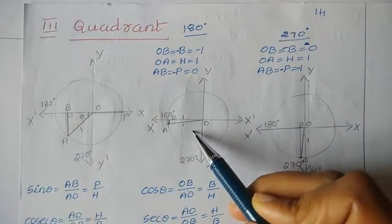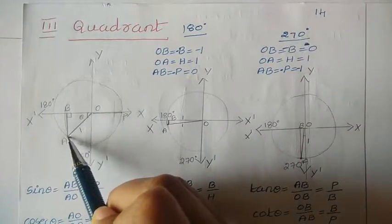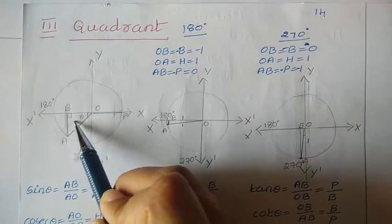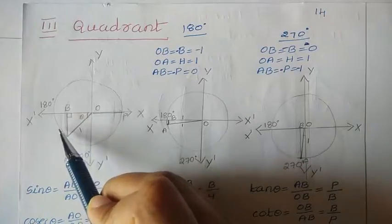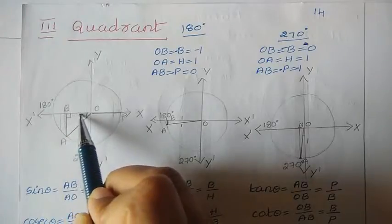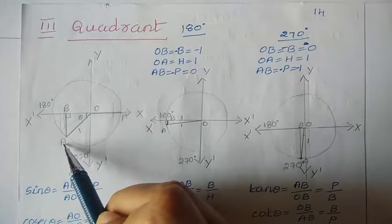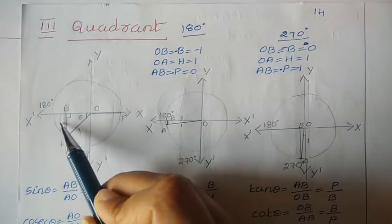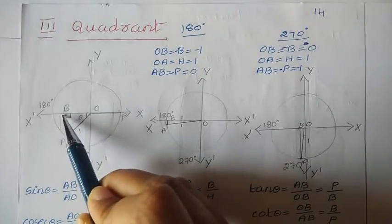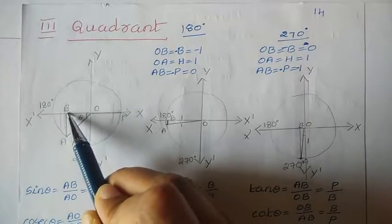So first let us see the 180 degree case and then the 270 degree case. If I bring the line backward, the angle and perpendicular shift accordingly. As I move backward this point, the perpendicular length is decreasing slowly, and not only that — the base length is increasing.